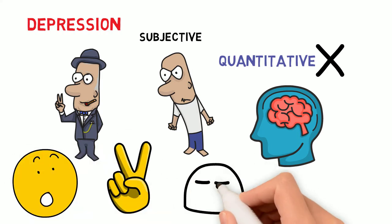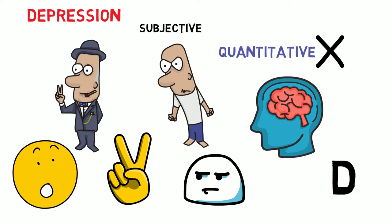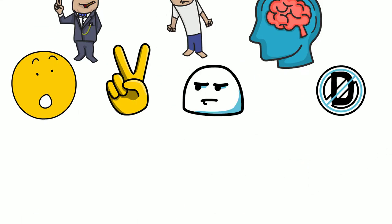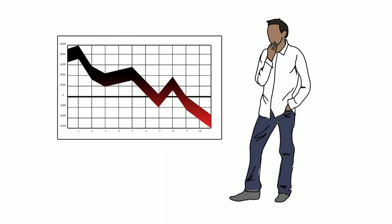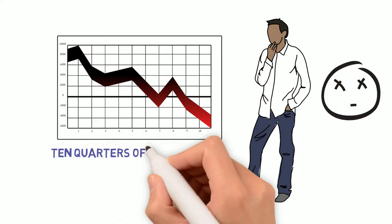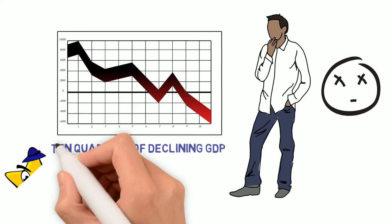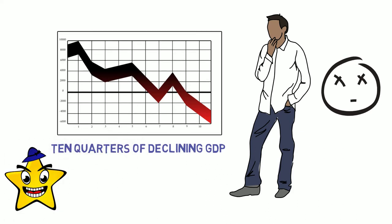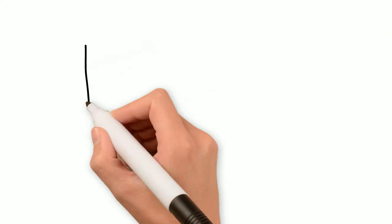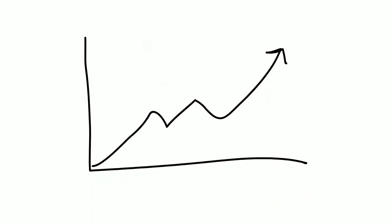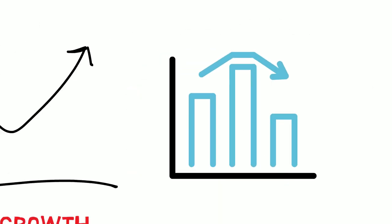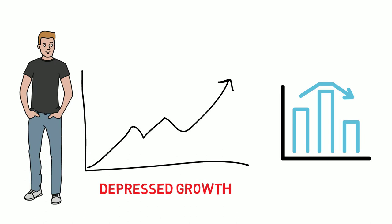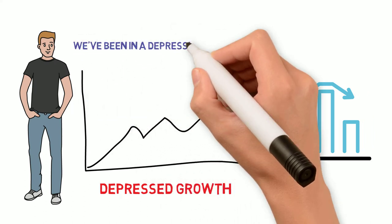But economists just don't like to talk about it. They have kind of banned the D word. So a lot of people assume that if a recession is two quarters or more of declining GDP, the depression sounds worse. It must be ten quarters of declining GDP, some really horrible economic outcome. And that's not the definition. We can actually have growth in a depression, but the point is it's depressed growth, growth below trend, below potential.